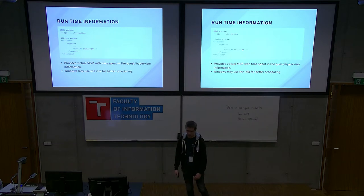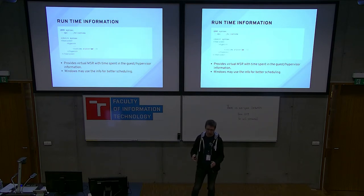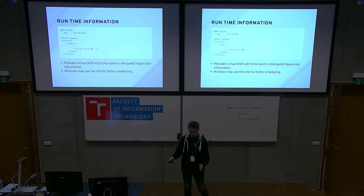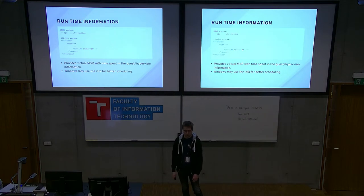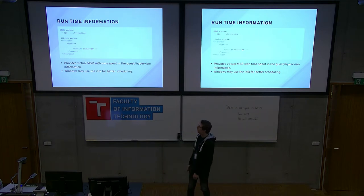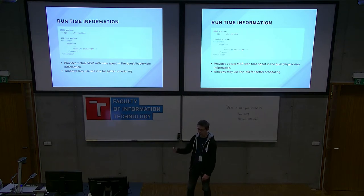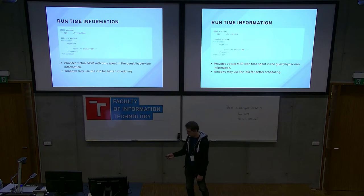Runtime information: you share your physical CPU with other guests, so sometimes your vCPU runs, sometimes it doesn't. Your guest may want this information for better scheduling — for example, to give fair time slices to applications. There's an MSR that KVM uses to tell Windows how much time it spent running the guest versus not running it. However, reading an MSR is costly, so Windows, as far as I know, doesn't use it for scheduling — it may use it for something else.